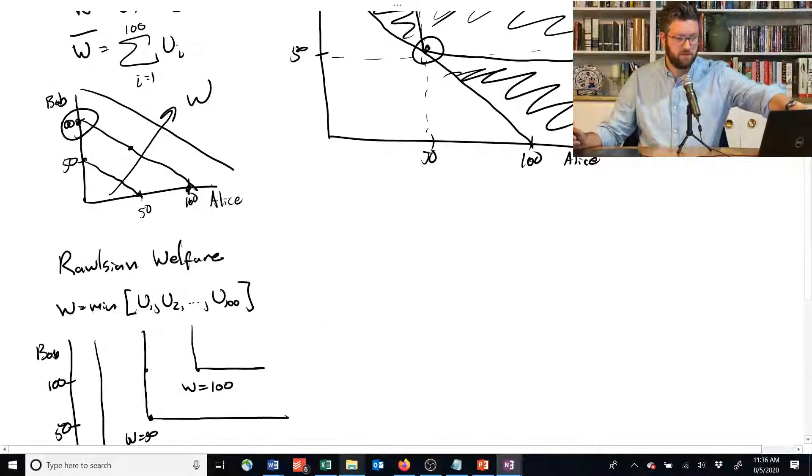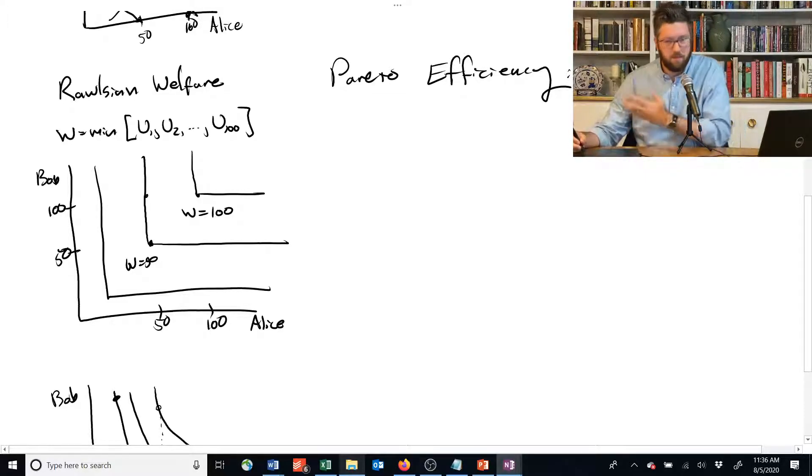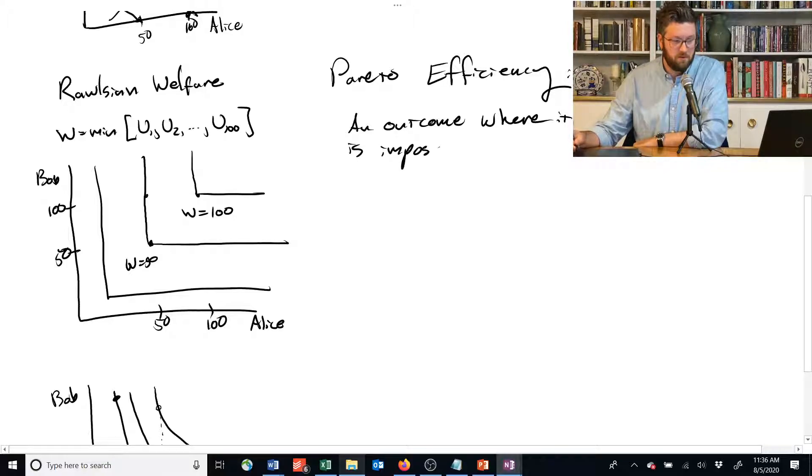And this criteria is sort of the formal thing we call Pareto efficiency. And this is what, as economists, we try to give you. A Pareto efficient outcome is an outcome where it is impossible to increase utility or the quantity of some good for one person without decreasing it for another.